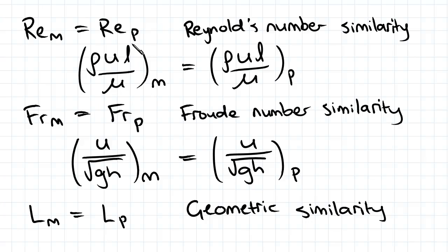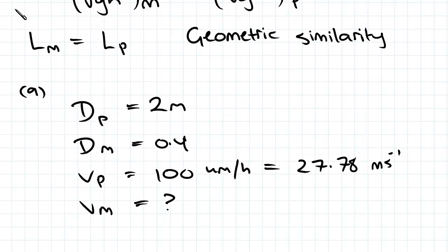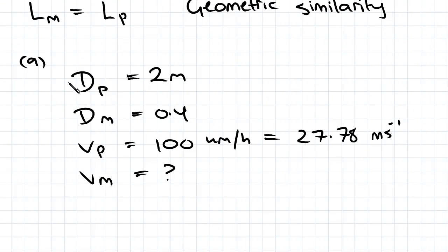So that can also be a D in there. If we cancel those out because they're constant, U and D we're going to be comparing them, and we've been given all our U's and D's except for the one we want to find. So it would be suitable to use Reynolds number similarity for part A.